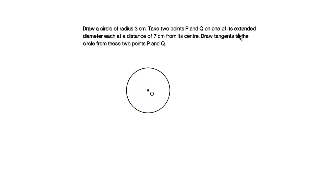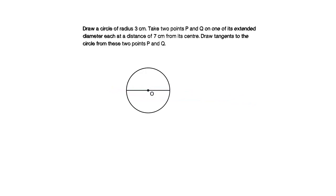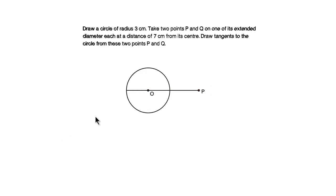So first let us draw the diameter of this circle. Let us extend the diameter to mark a point P which is 7 centimeters away from the center of the circle. Similarly, let us take point Q, 7 centimeters away from the center of the circle, which is on the left side of the circle.